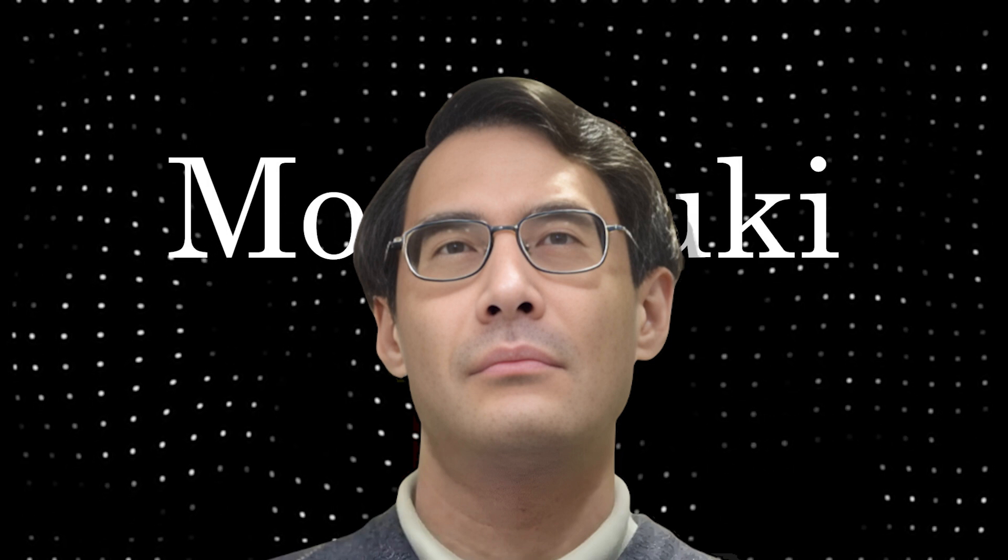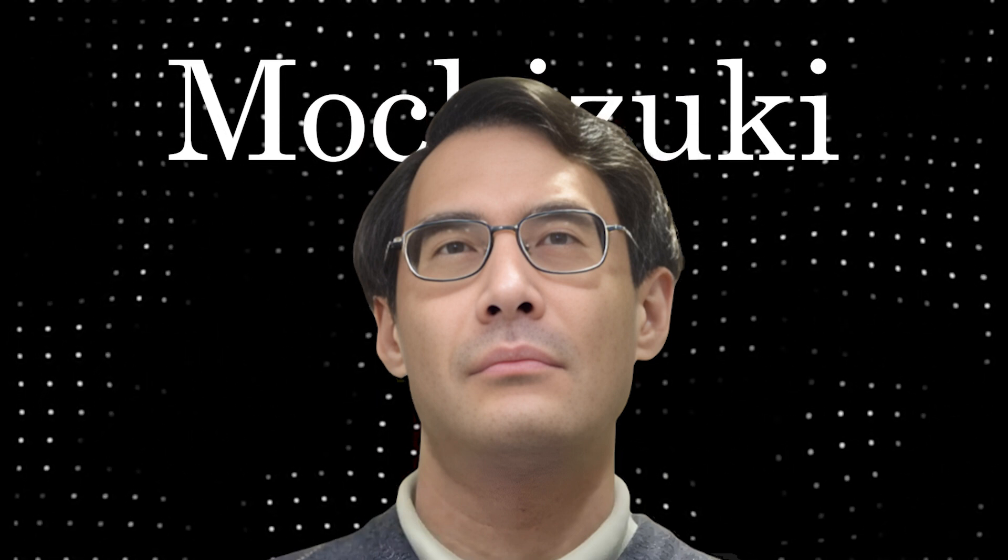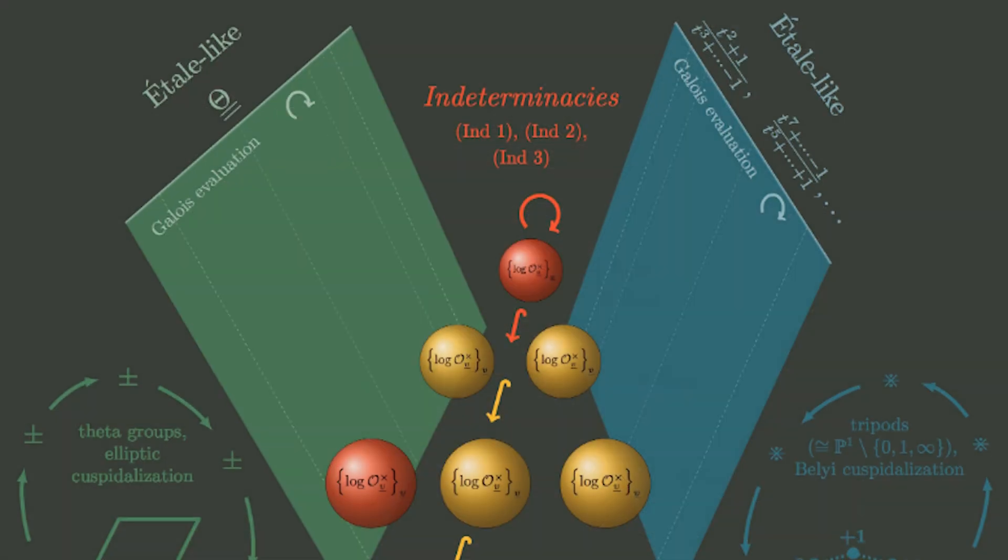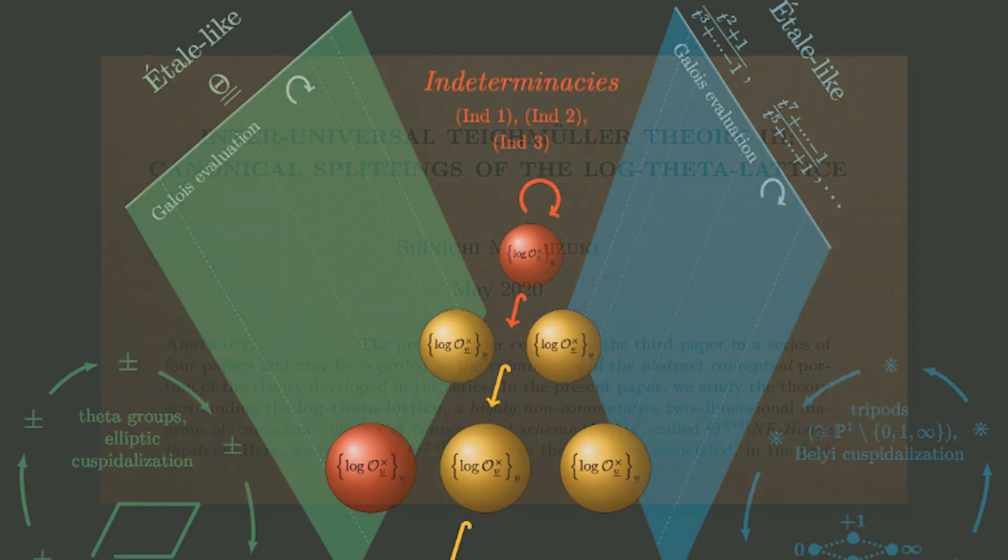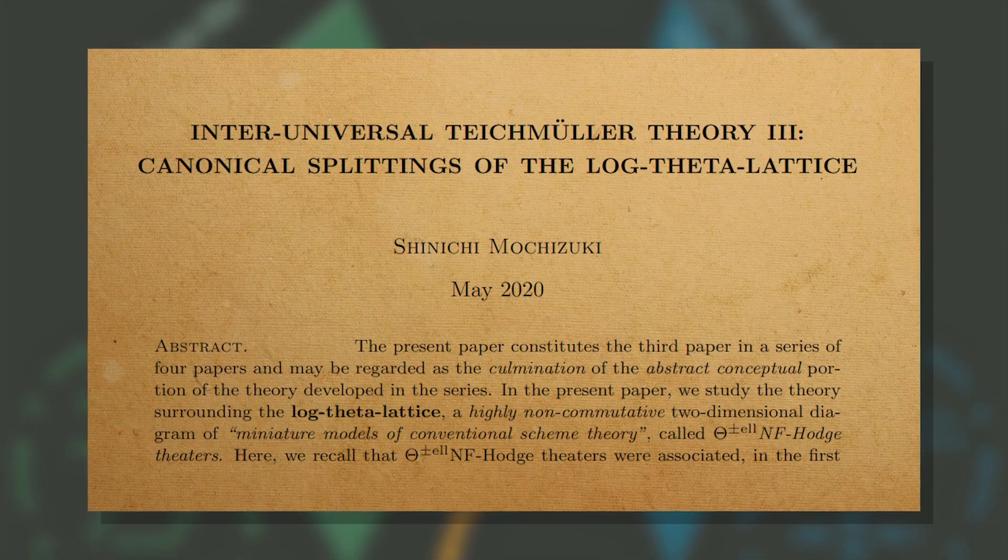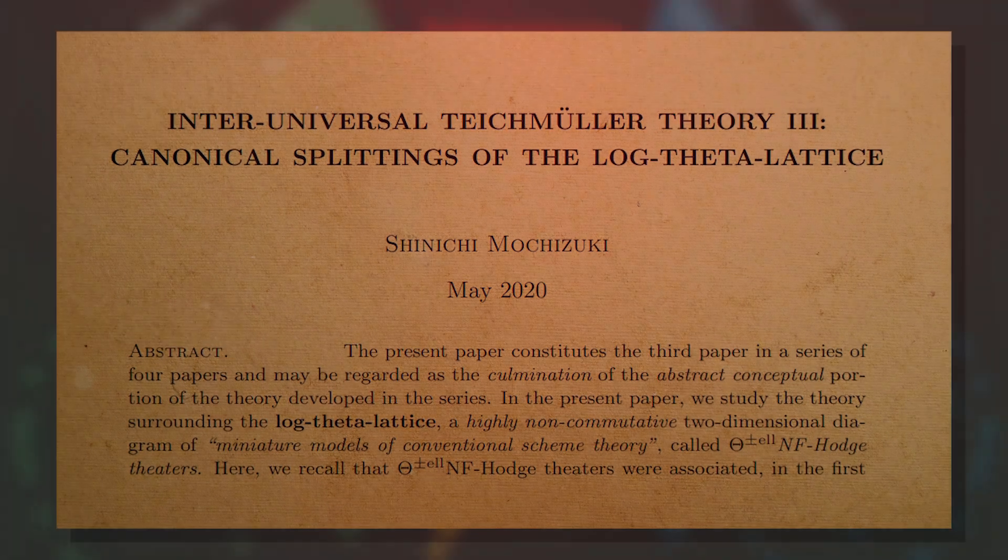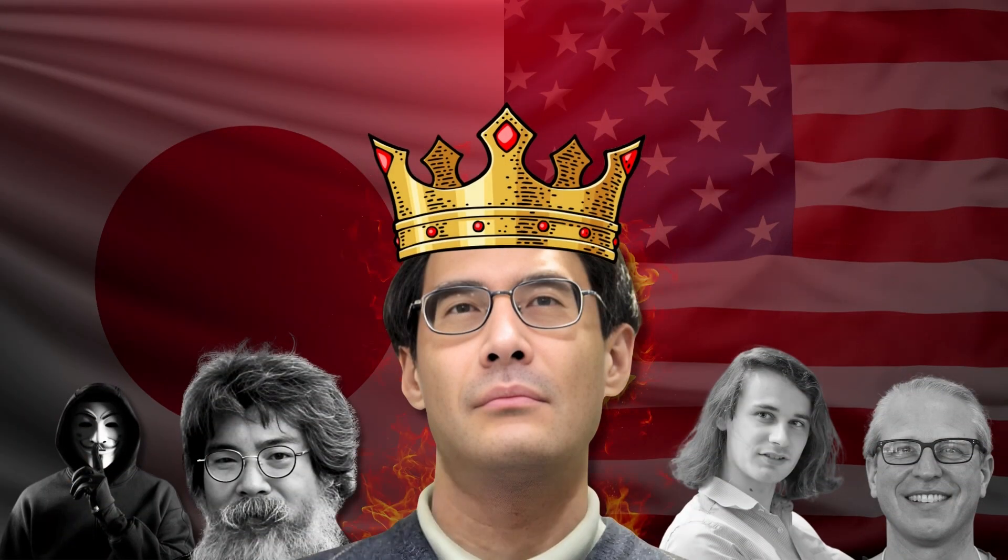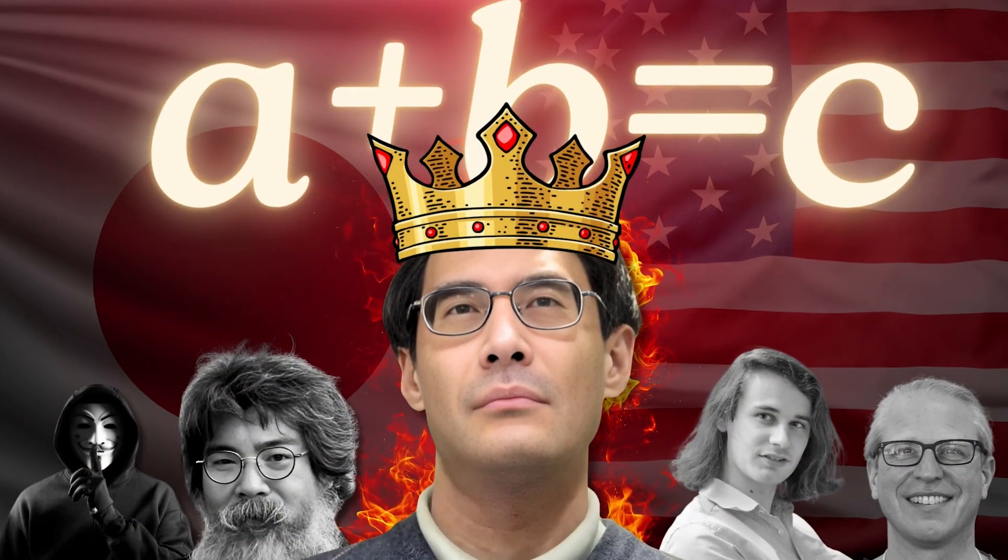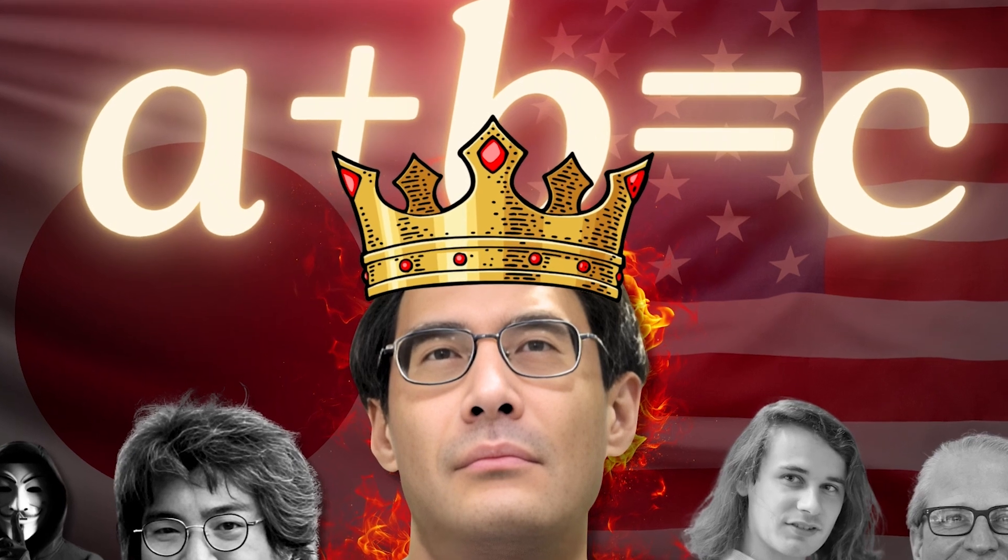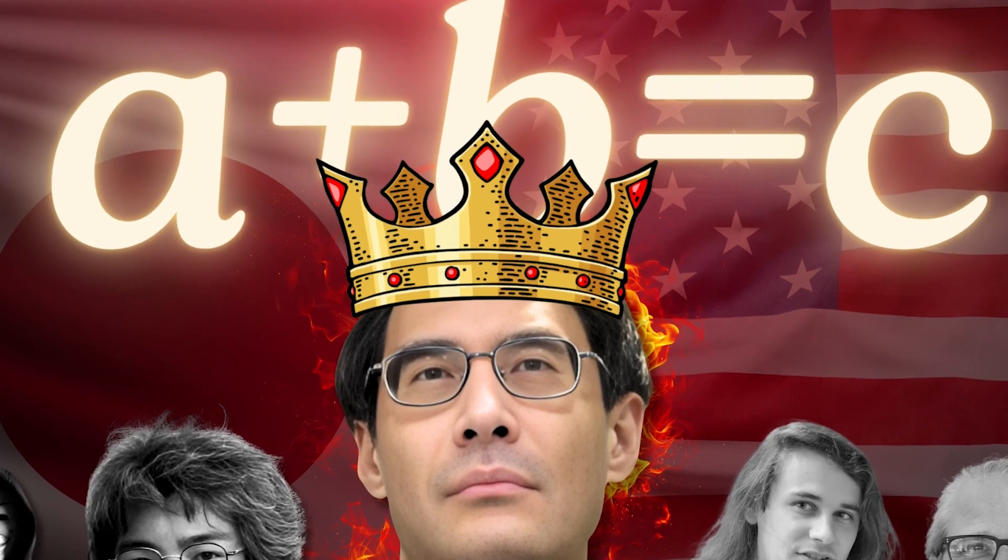There have been a few claimed proofs, the most famous coming from Shinichi Mochizuki. He published over a thousand pages of dense original mathematics, creating an entirely new framework called Inter-Universal Teichmüller Theory. However, despite years of effort, very few people have been able to fully understand it, and most of the mathematical community still doesn't accept the proof as valid.